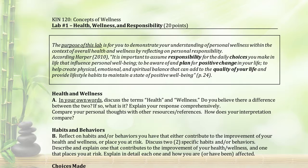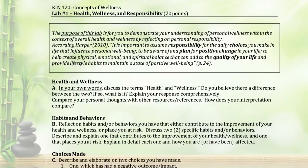After your first paragraph defining health and wellness, you'll reflect on personal habits or behaviors as they relate to overall wellness. In Part B, discuss two specific habits or behaviors — one that contributes to the improvement of your health and wellness, and one that places you at risk. So you're talking about something beneficial as well as something with potential negative consequences.